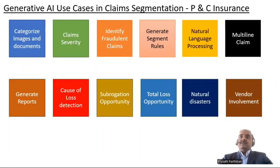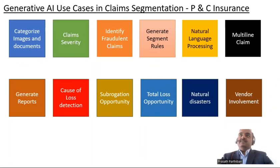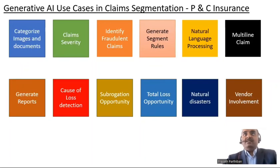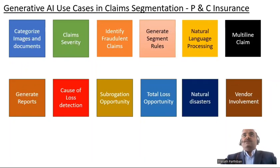Natural disaster is a very important factor nowadays — we have flood, windstorm, etc. Using the data, AI can easily identify a claim related to a natural disaster so that it can be segmented and assigned to the correct people, ensuring payments are made in a timely manner.